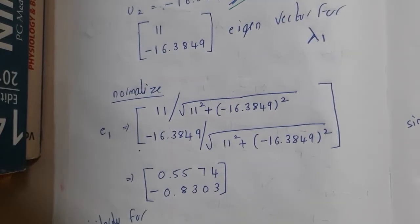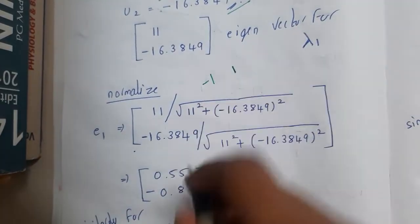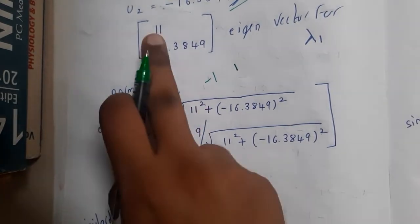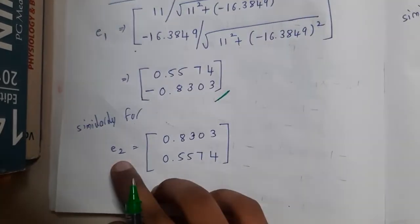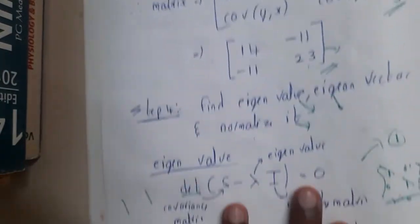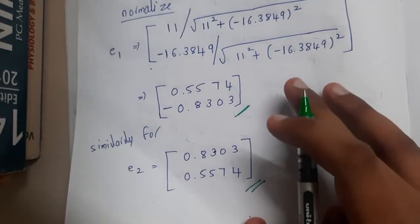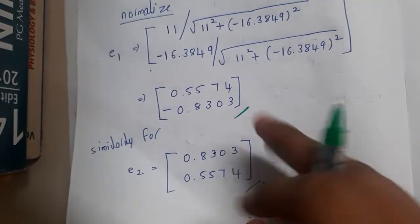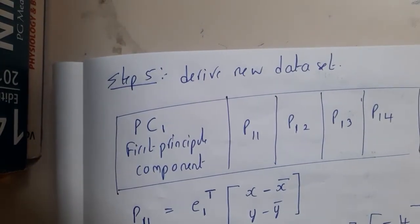Once you have the eigenvectors you need to normalize them. The normalized values should always be between minus 1 and 1. To normalize, compute the square root of u1-squared plus u2-squared and divide each component by that. Do the same for eigenvector 2 using the lambda 2 value of approximately 6.5 or 6.6151. This eigenvector and normalization part is the only complex part of the whole problem — once that is done, the rest is straightforward.